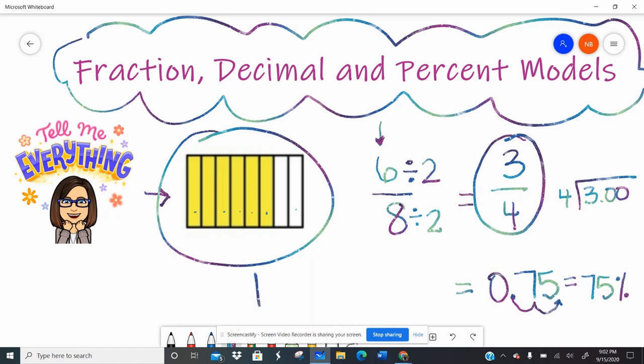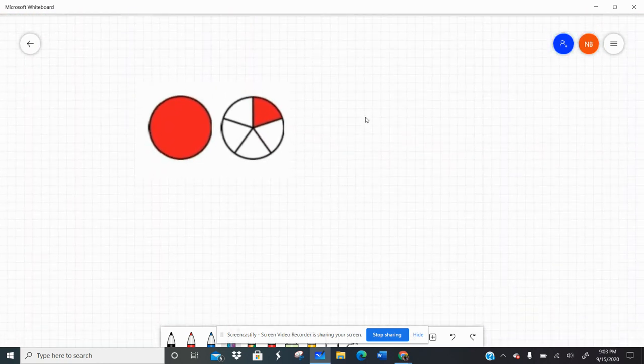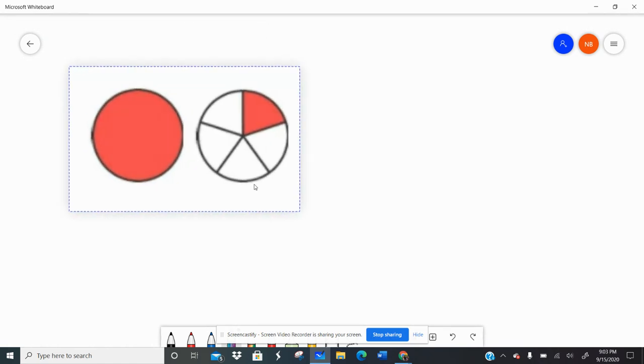So this model would be 3 fourths would be the fraction, 75 hundredths would be the decimal, 75% would be the percent. That one's not too bad starting out. Let's look at this next picture.